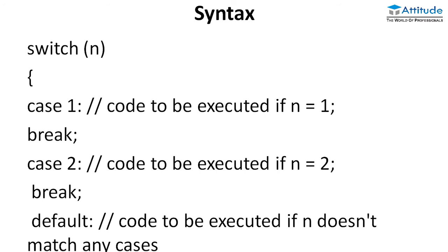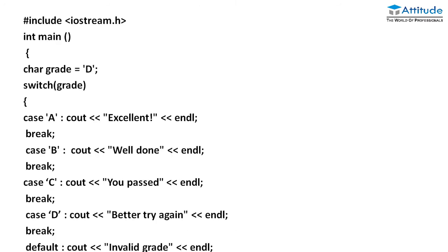You can see the simple switch syntax: inside switch we write the expression n, then case 1 with a break, then case 2 with a break again, and another way is default — if no case matches, it goes to the default statement. In the live implementation example, grade is set to 'd'. As the expression goes to 'd', it follows the matching case which prints 'Better Try Again'. Then break is applied, and that is the end of that case statement.